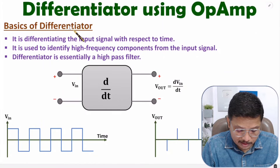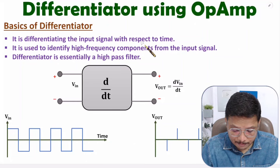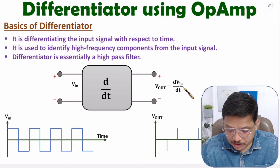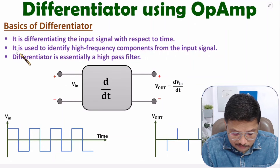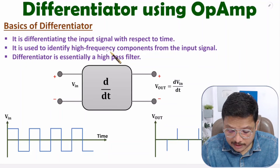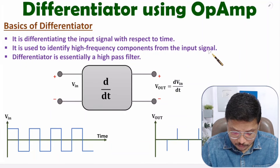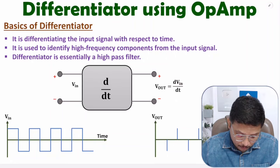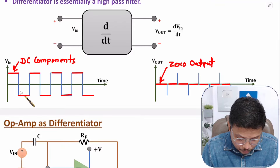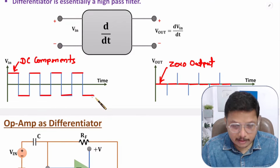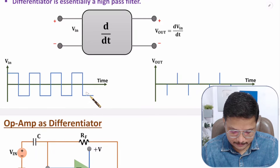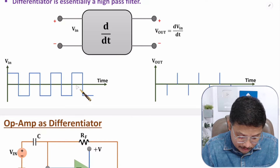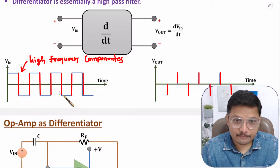Now let us start with the basics of differentiator. A differentiator is differentiating the input signal with respect to time. If your input is V-in, then output will be the differentiation of input with respect to time. This differentiator is used to identify high frequency components from the input signal. Here, where the input is constant, it does not have high frequency components. But where the input is varying fast, those are the portions having high frequency components.